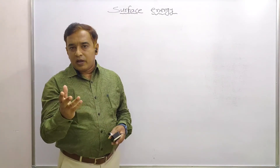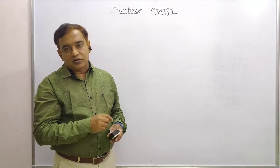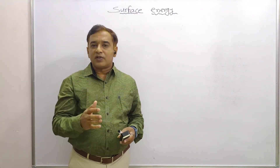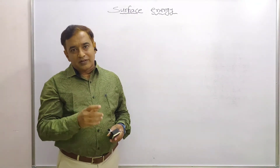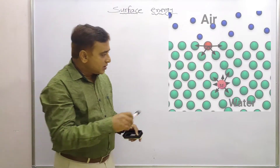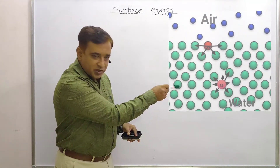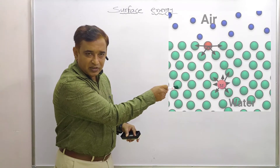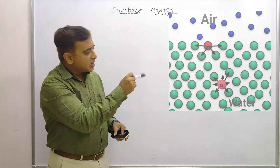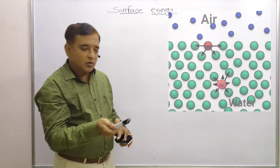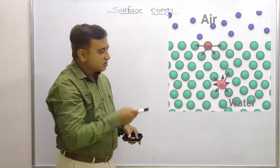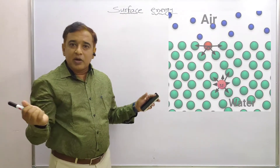Now we consider the molecule at the surface. Other molecules at the surface are holding together, as shown in the diagram. The molecule inside the liquid, shown in red, is attracted by all the molecules beside it, and hence its resultant cohesive force is zero.